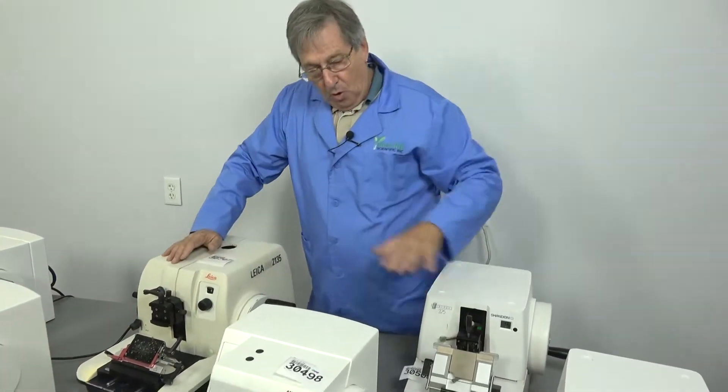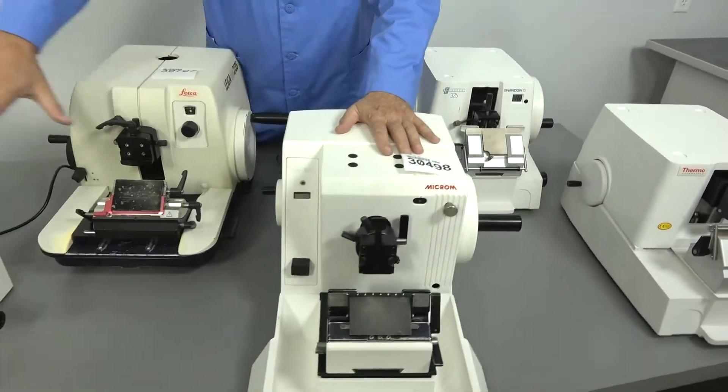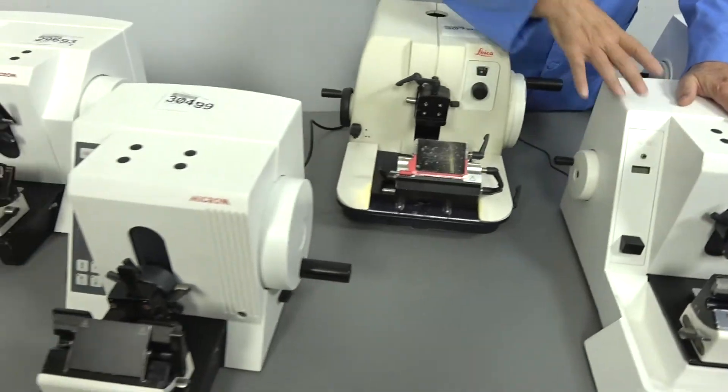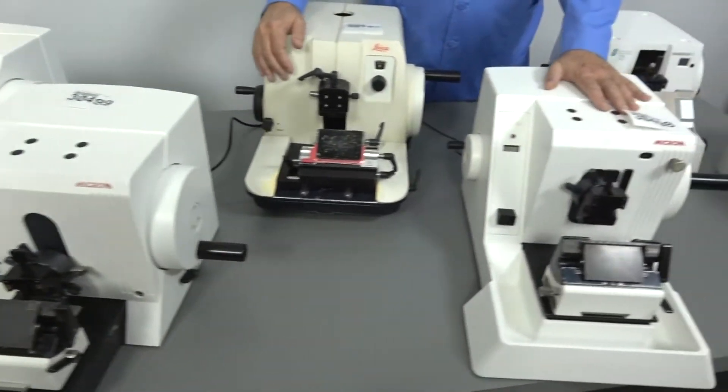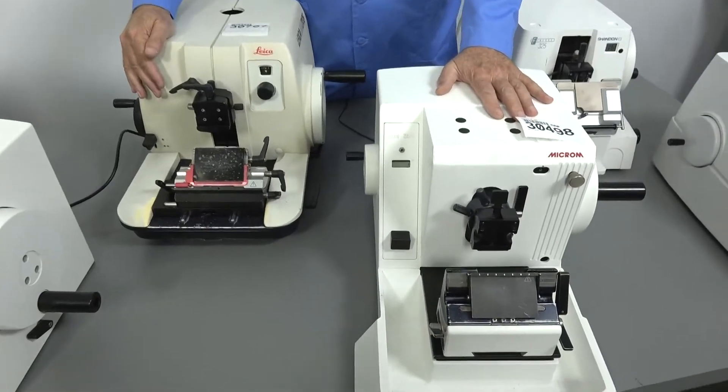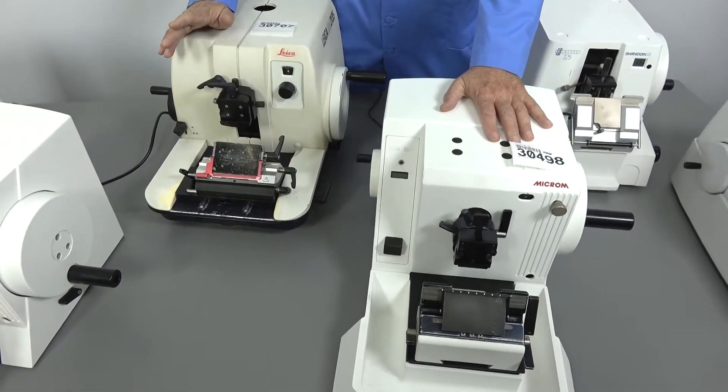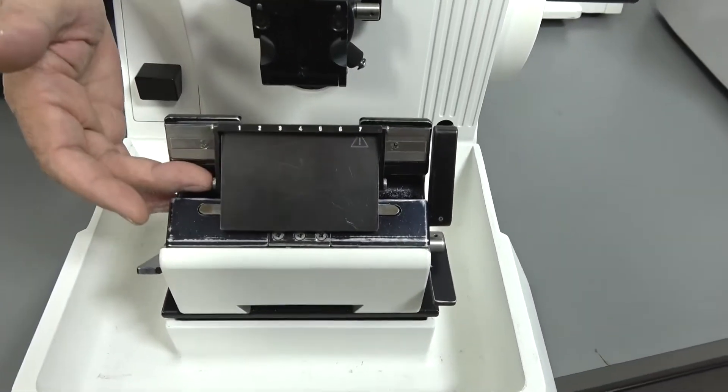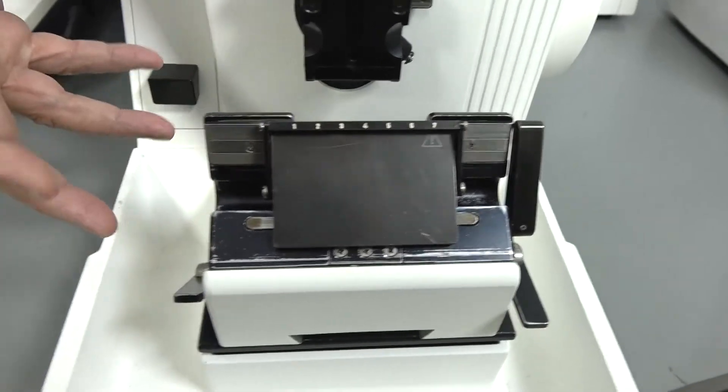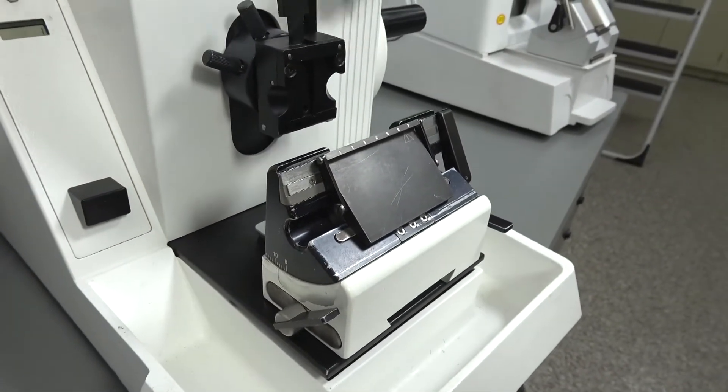All the knife blades on all the units—the Finesse 325, then we get into the Micron—all the knives are very similar in design. That's been fixed for a number of years. As far as fixed in place, there's been no leap in technology. Multiple levels of operation from angle of attack, distance...